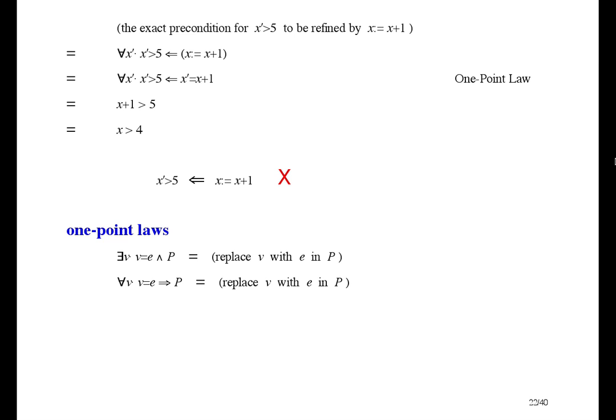x prime greater than 5 is not refined by x gets x plus 1. So there's two things you can do about it. One is to change the right side and find something that it is refined by. The other is to weaken the left side by adding the exact precondition as an antecedent.